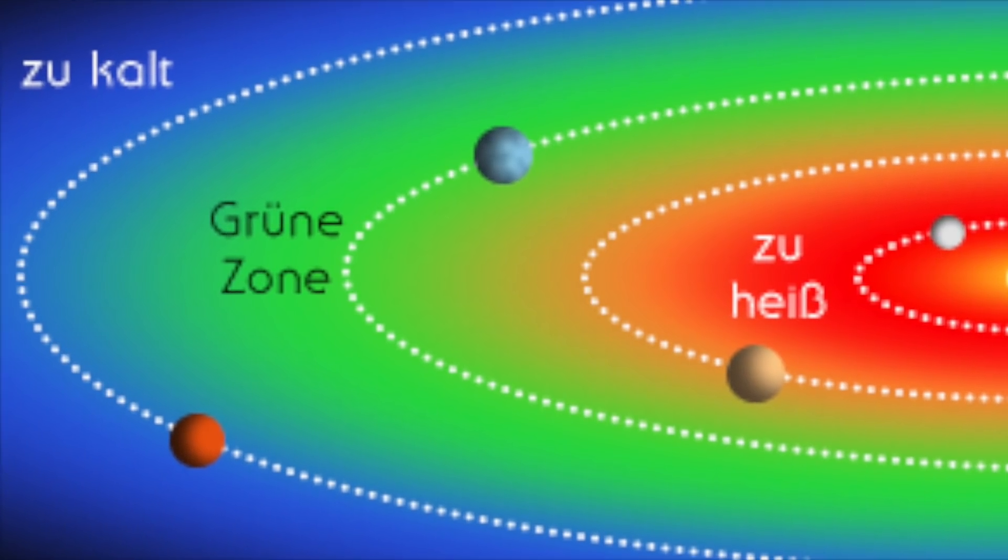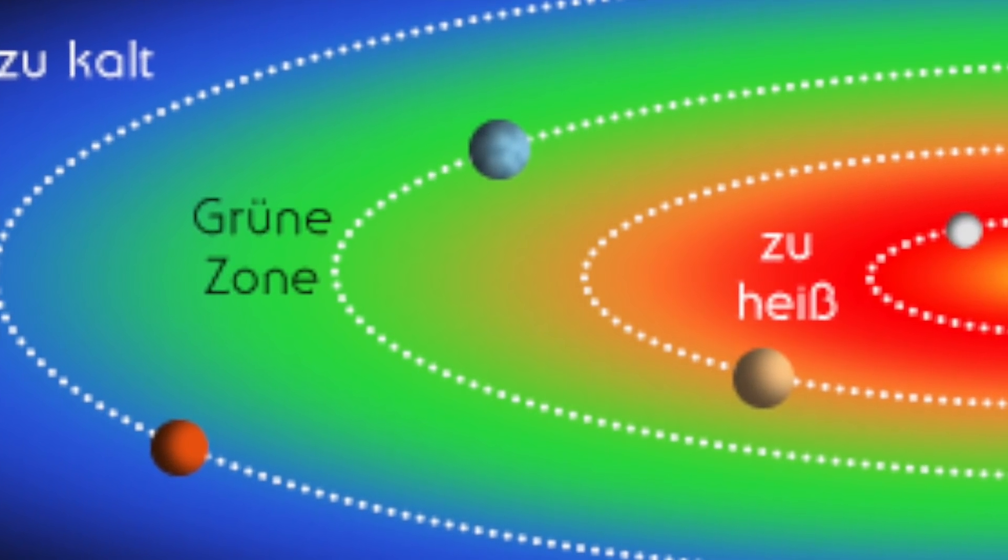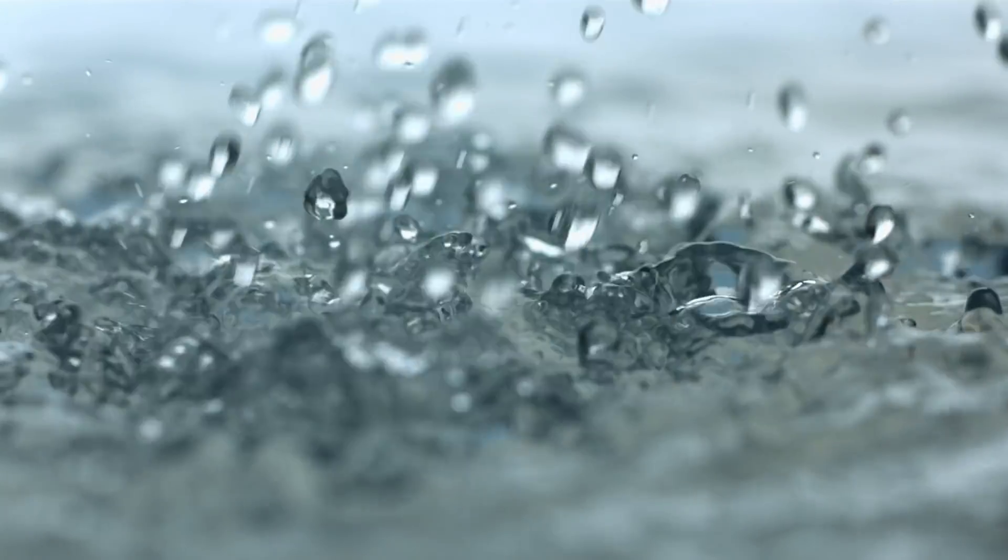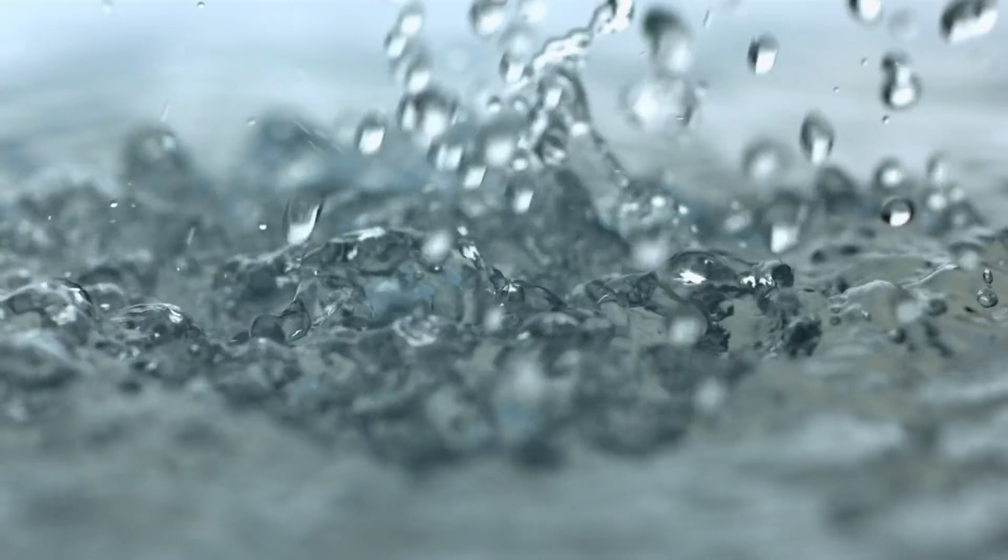Specifically, this refers to the distance range from a star within which a celestial body must be located in order for water to exist in a permanently liquid form on the planet's surface.